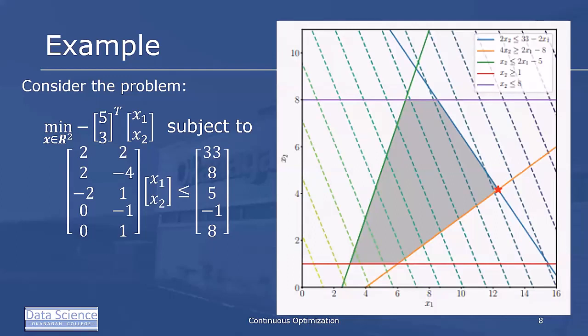Here's an example. We want to consider the problem of minimizing [-5, 3]^T [x₁, x₂] subject to the matrix constraint with coefficients [2, 2; 2, -4; -2, 1; 0, -1; 0, 1] times [x₁, x₂] ≤ [33, 8, 5, -1, 8].